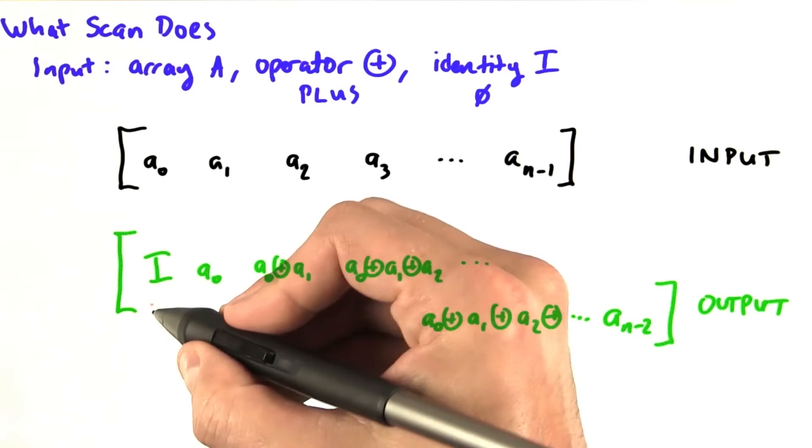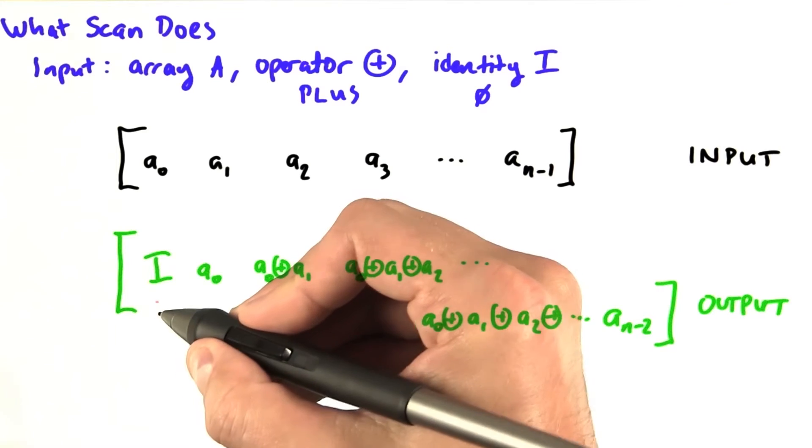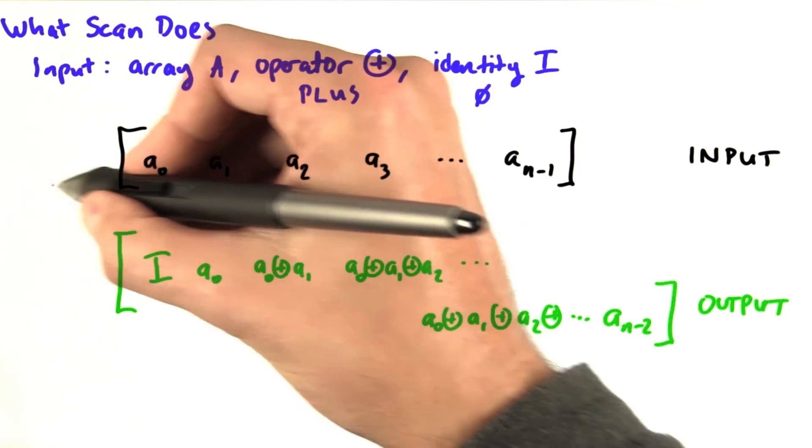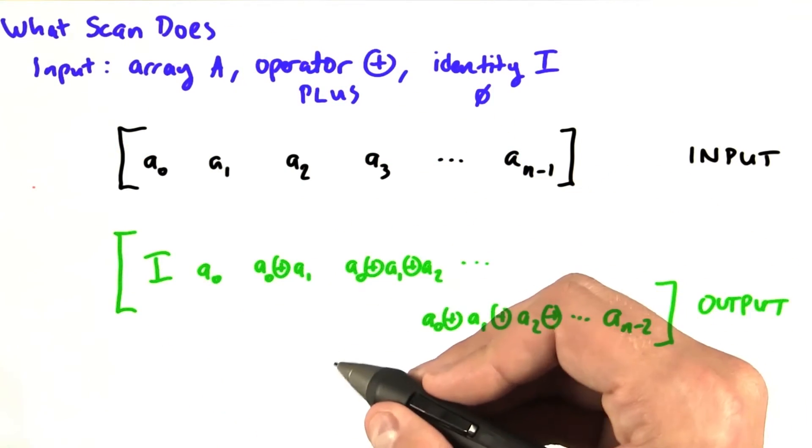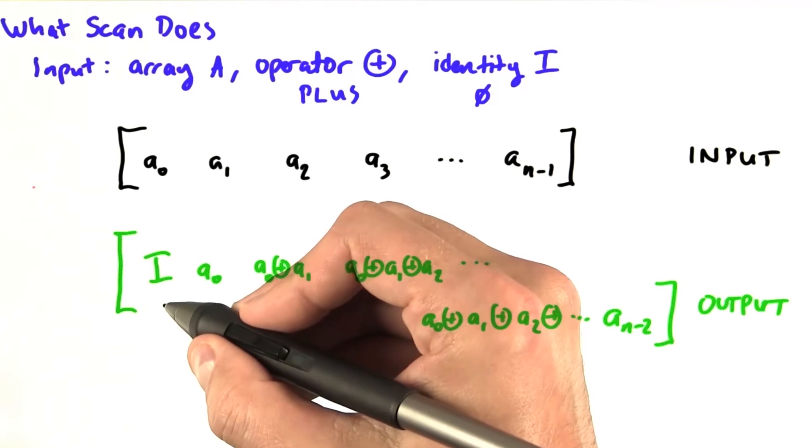So let's see if that actually works. So the output at position 0 is the sum of all the elements that come before it. Well, there's no elements before it, so the output is simply the identity element.